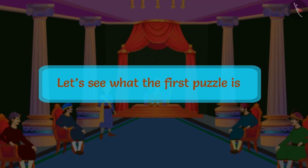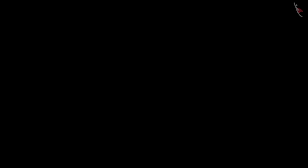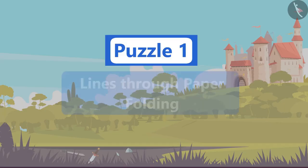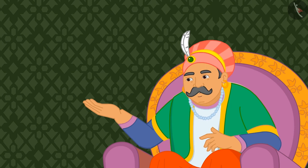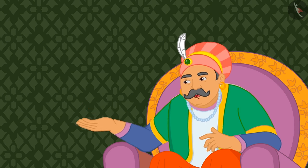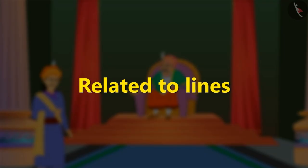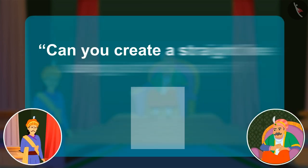Let's see what the first puzzle is. Puzzle one: lines through paper folding. Akbar told Birbal that his first set of questions would relate to lines. Can you create a straight line using this paper, asked Akbar.